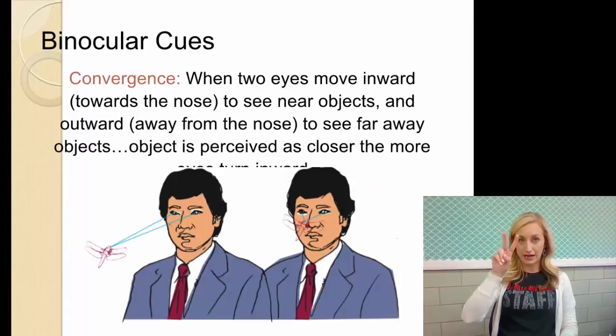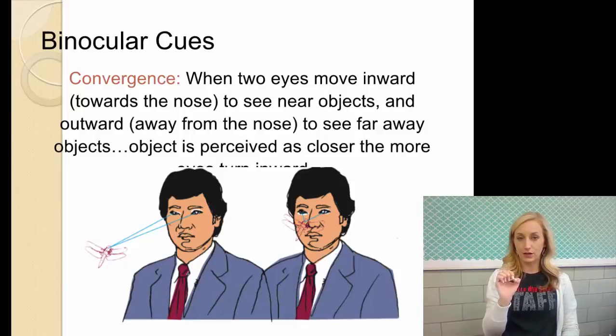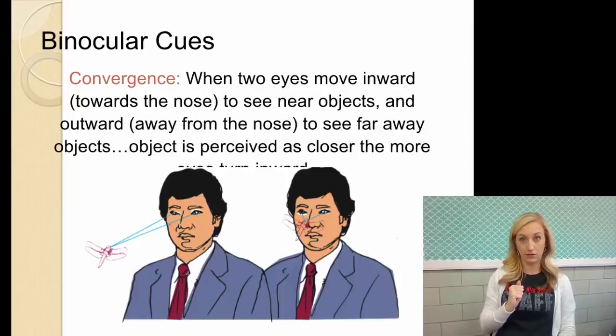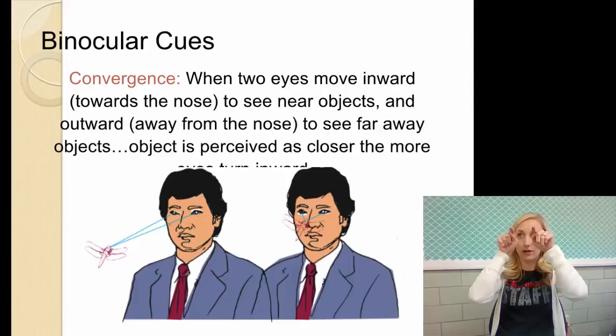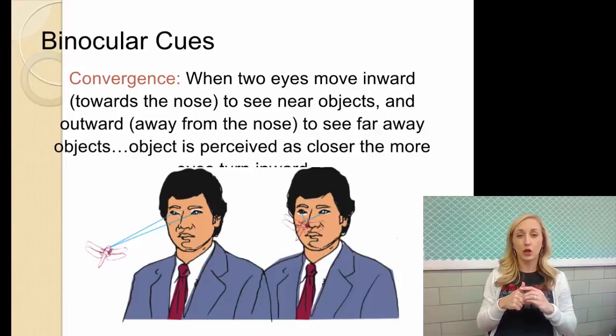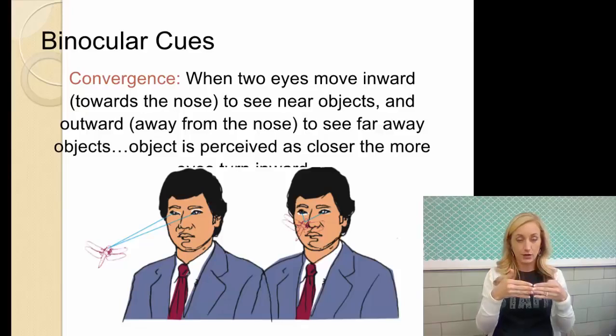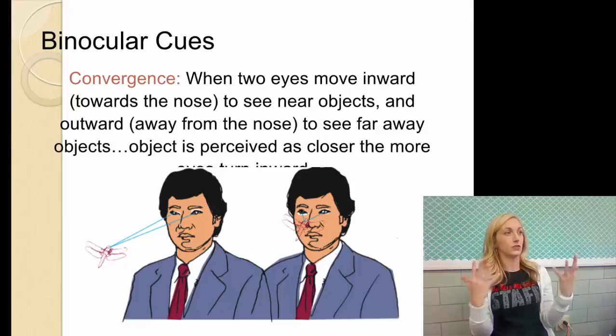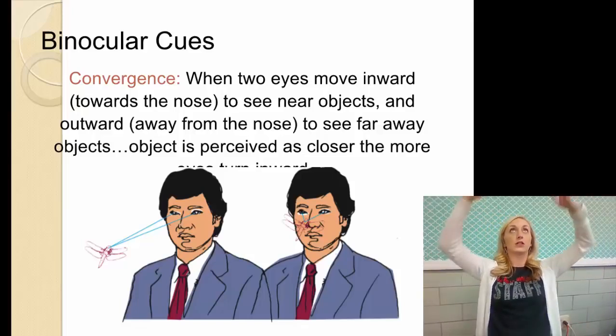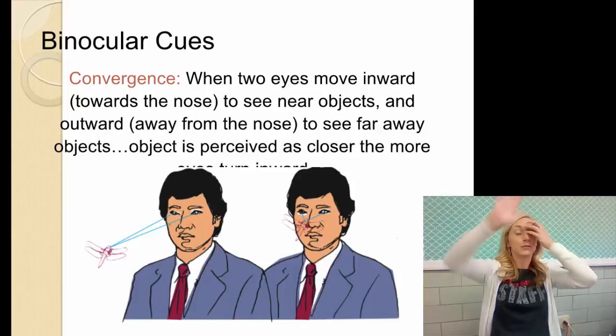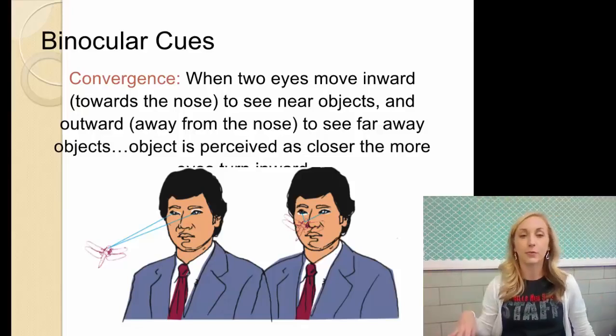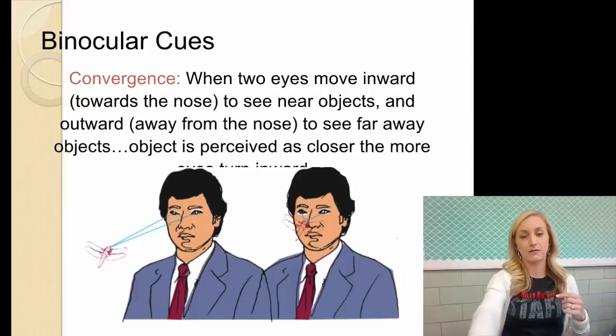All right, binocular cues, bi being two, we need two eyes to perceive depth with these two depth perception cues. Convergence. So we have two eyes. Therefore, it's a binocular cue. When they move inward toward the nose to see an object, and outward, they move more parallel to each other to see faraway objects. An object is perceived as closer the more we have to turn our eyes inward. And this can, we can kind of have ourselves thrown off when we're like in a big city and we look at a building that we're standing like at the foot of. We look up and it's like, wow, that totally kind of gives you like vertigo because you have to look inward to see it, but it actually is farther away from you because it's so ginormous and high up there. So the more they turn inward, the closer we perceive that object to be.